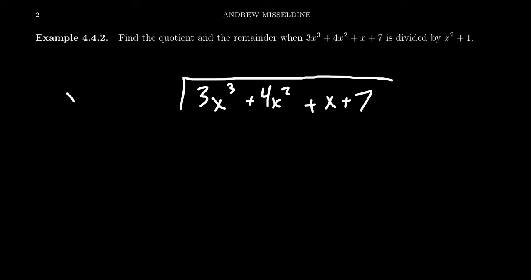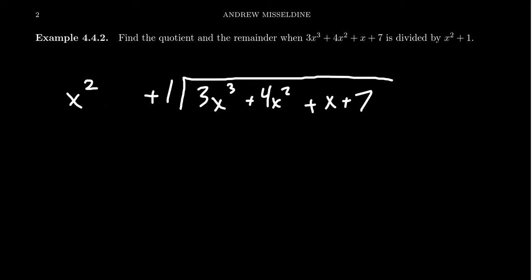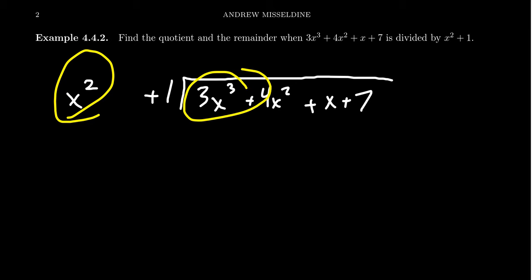We're going to divide this by x squared plus 1. If you're wondering why there's a huge gap here, it's that when terms are missing, you might want to keep track of that. For example, this polynomial doesn't have an x term. So if you want to, you could insert a 0x placeholder to be very clear that there's a term missing. I'll just leave a blank — there's going to be a gap between the x squared and the plus 1. Now we want to consider how many times does the leading term of our divisor divide into the leading term of the dividend.